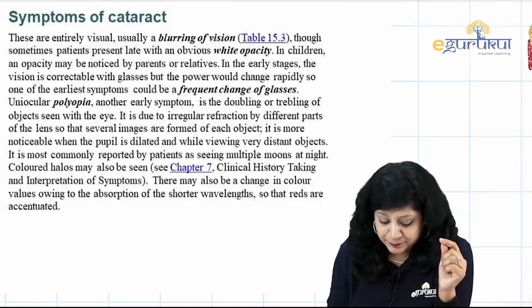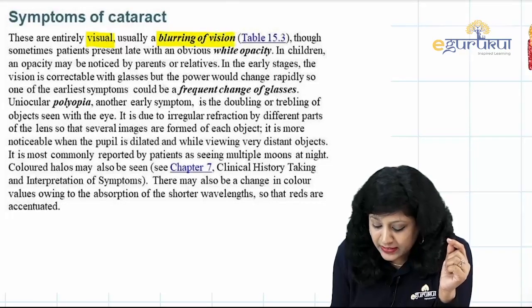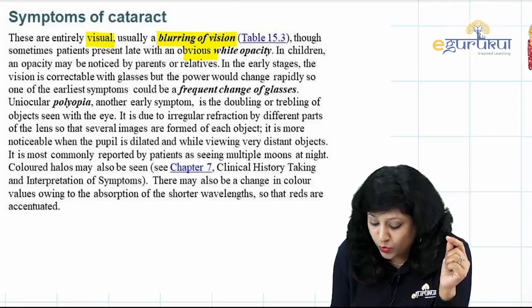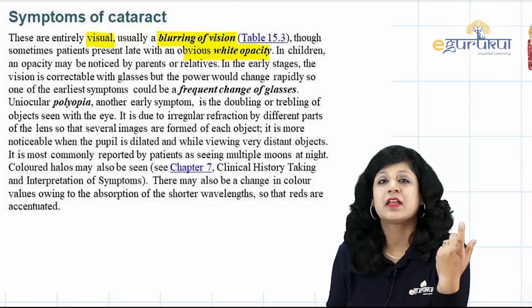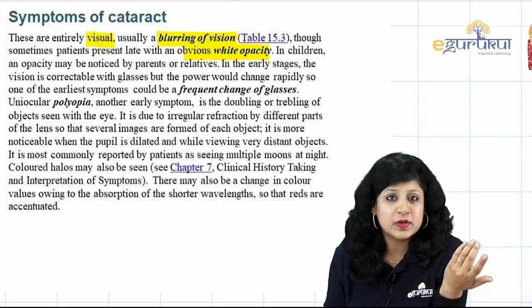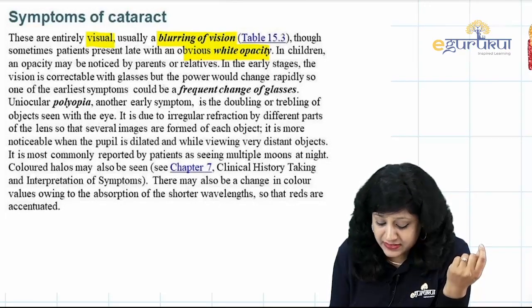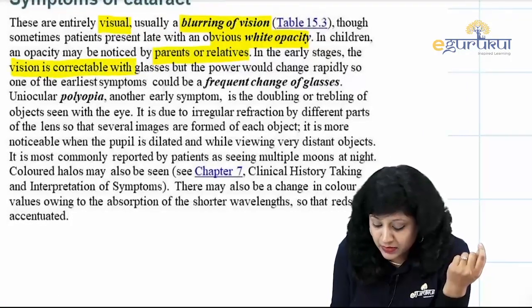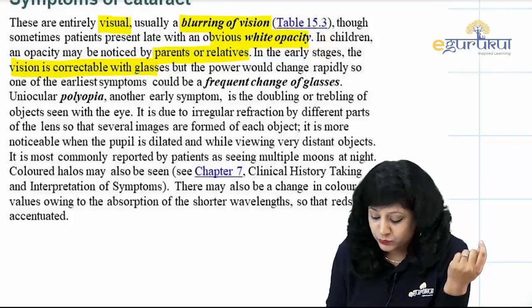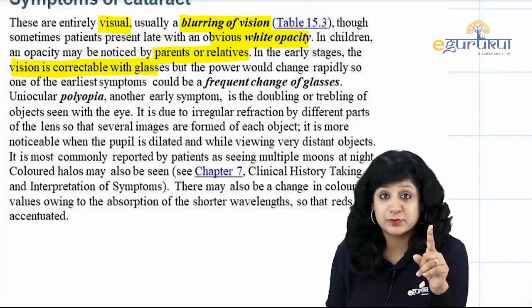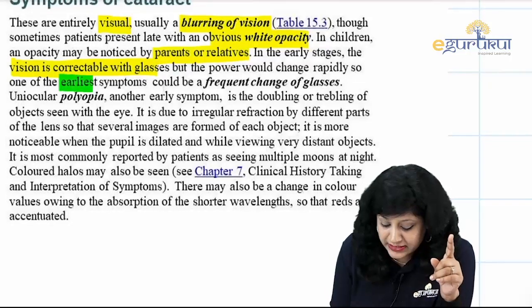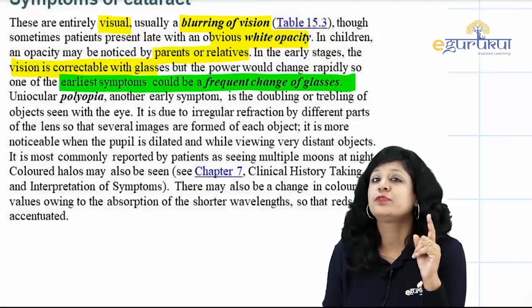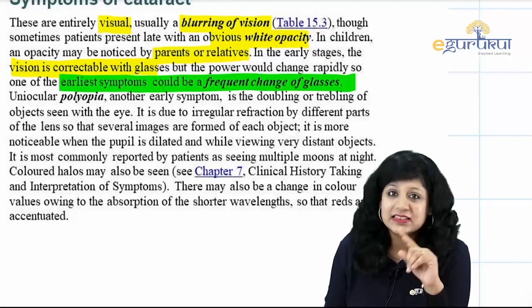The symptoms of cataract are entirely visual — usually a blurring of vision, though sometimes patients present late with an obvious white opacity. In children, opacity may be noticed by the parents or relatives. In the early stages the vision is correctable with glasses, but the power would change rapidly. One of the earliest symptoms of cataract is the frequent change of glasses — specifically the distant glasses.